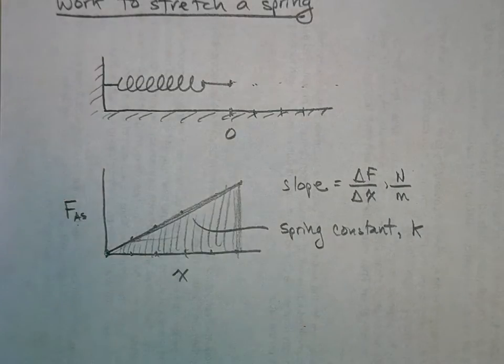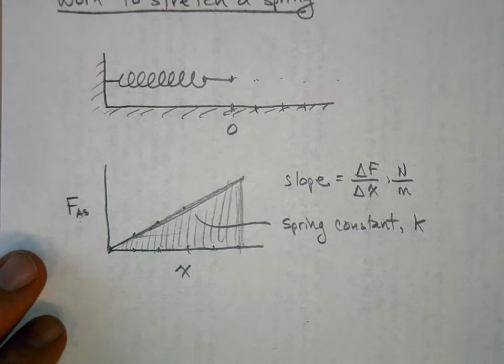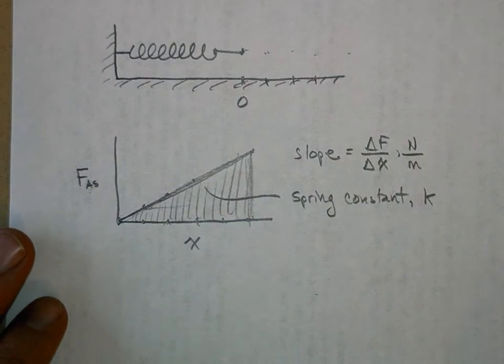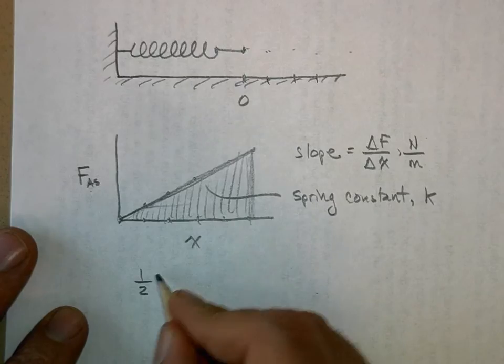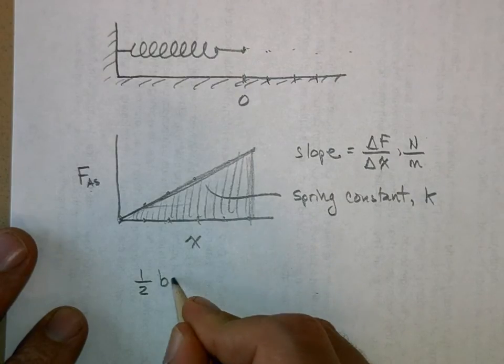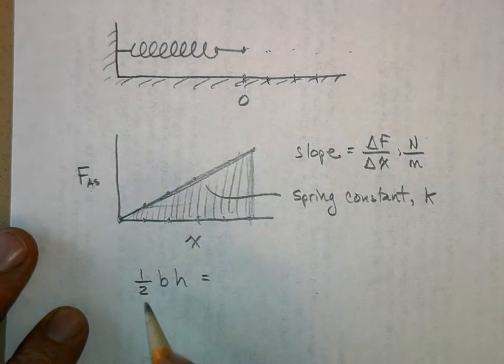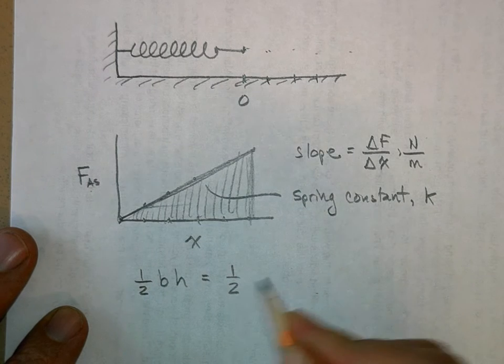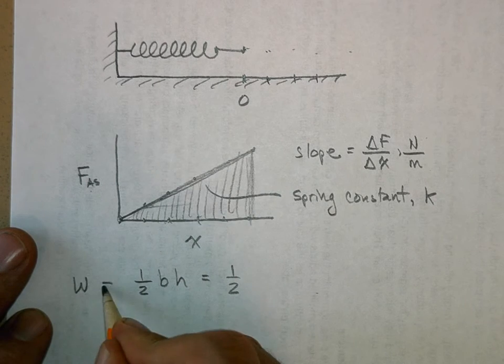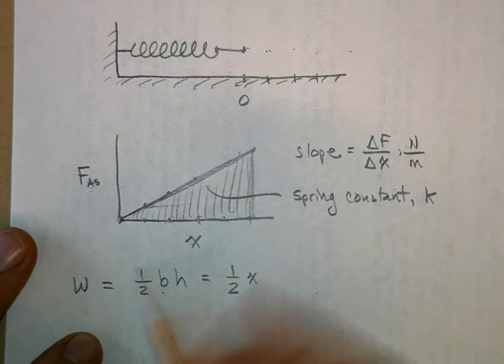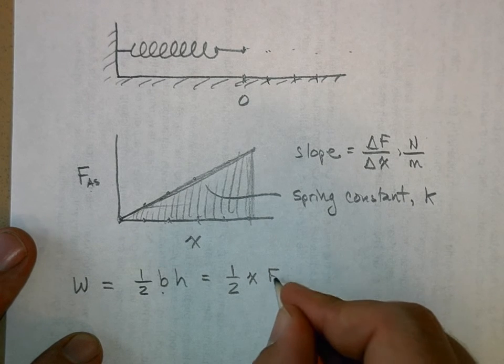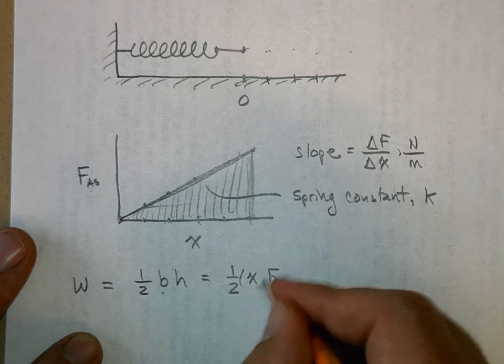So this is the work it takes to stretch the spring. I'm doing this a little differently than the book does, but just follow along. Well, this is a triangle, right? So this is one-half the base times the height. So one-half - this is the work done because the work is represented by the area underneath that graph. The base is x, and this is the force that I apply to the spring. Those are my two variables.